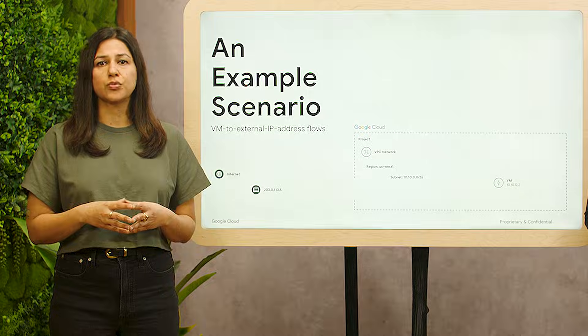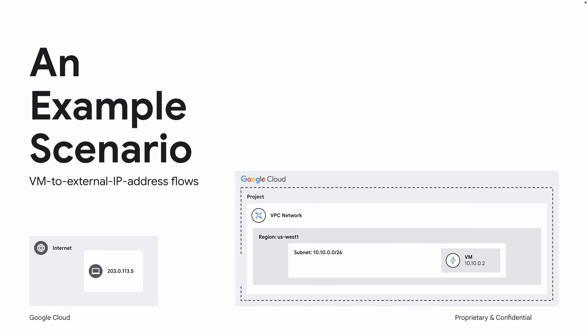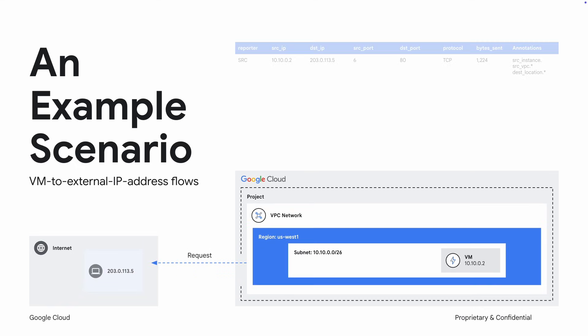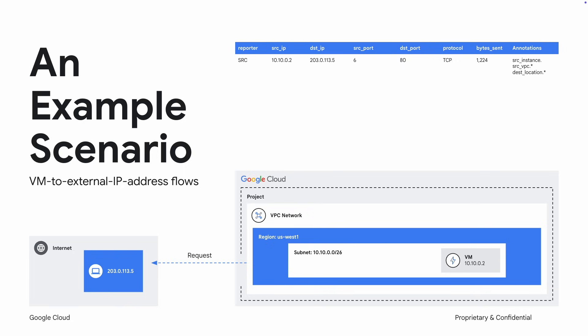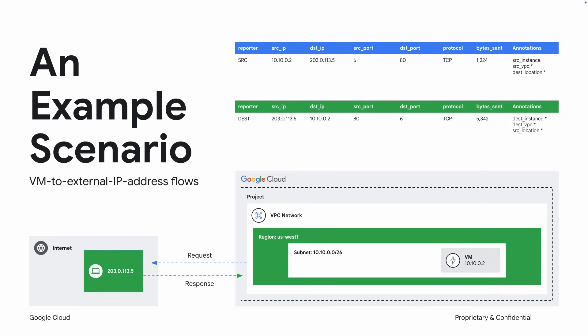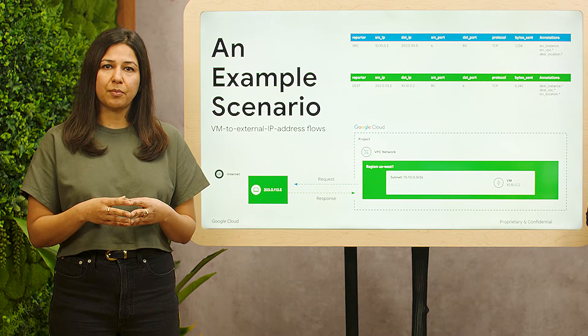Let us illustrate VPC flow logs with an example scenario. Consider a VM in GCP with IP address 10.10.0.2 communicating with an internet endpoint at 203.0.113.5. When the VM initiates a connection, sending a packet to the internet endpoint, a flow log record is generated. The record includes the five-tuple information along with the number of bytes and any relevant metadata, and also identifies the source VM as the reporter of the flow. When the internet endpoint responds, sending a packet back to the GCP VM, another flow log is recorded with the source and destination IPs and ports reversed, reflecting the direction of the traffic, and identifies the destination VM as the reporter of the flow.